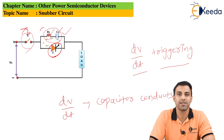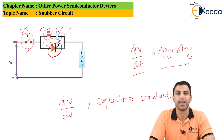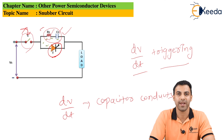This is the snubber circuit, which is used to protect the thyristor from unwanted or sudden triggering. Thank you so much for watching this video. Please stay tuned and subscribe to Ikeda. Thank you.